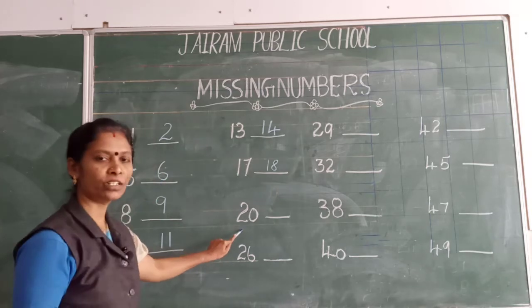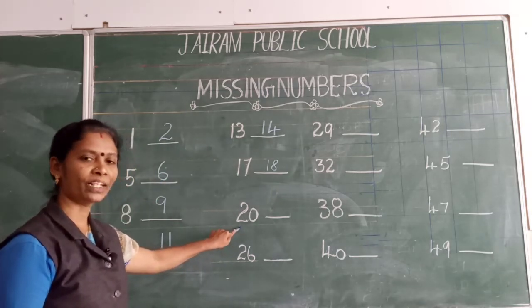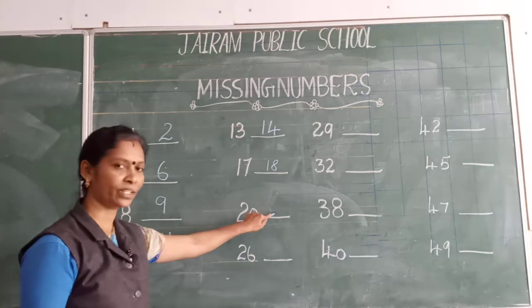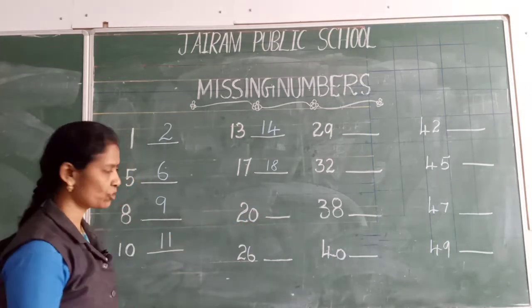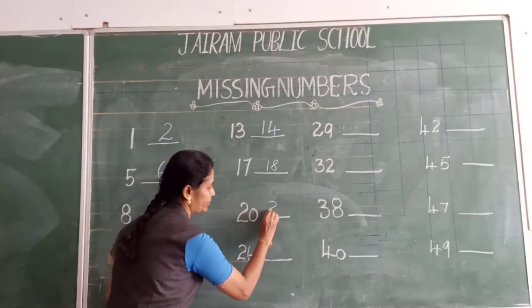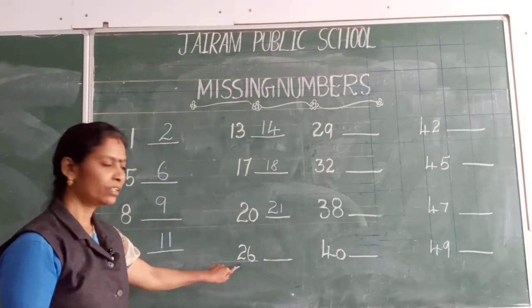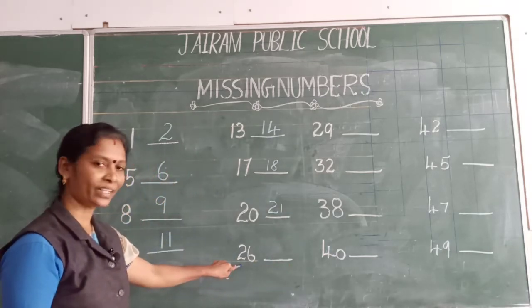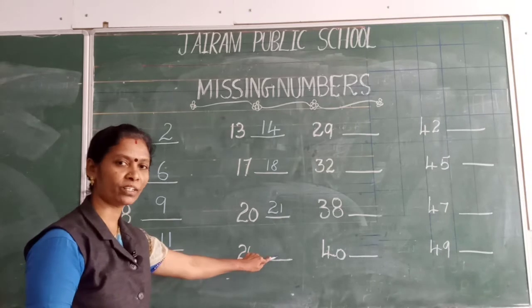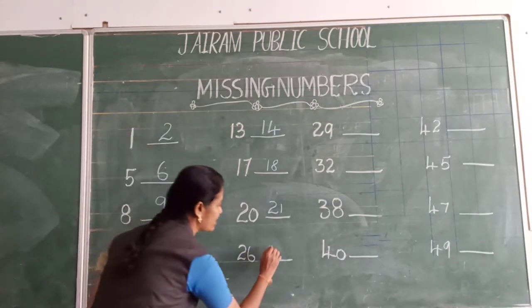What is this number? 20. After 20, what number is coming on the dash? 21. This number? 26. After 26, what number is coming? Very good. 27.